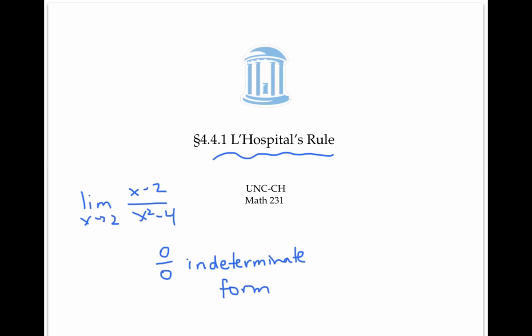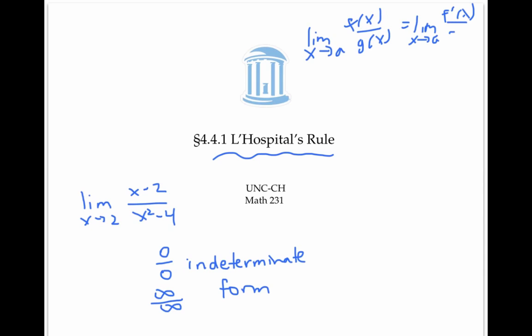In this video, we were able to evaluate zero over zero and infinity over infinity indeterminate forms by replacing the limit of f of x over g of x with the limit of f prime of x over g prime of x, provided that second limit exists. This trick is known as L'Hopital's rule.